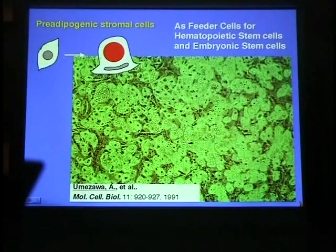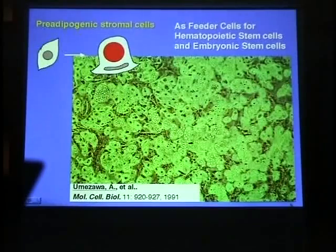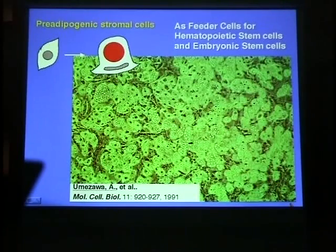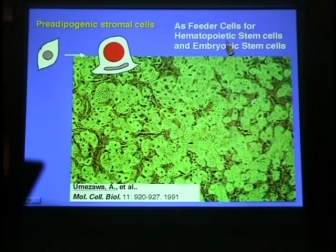Most stromal cells exhibit adipocytic differentiation. Adipogenic cells can be easily isolated and differentiated into fat cells at 100%. These cells were used as feeder cells for hematopoietic stem cells and embryonic stem cells.